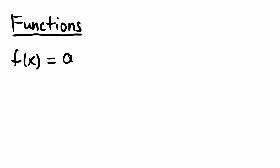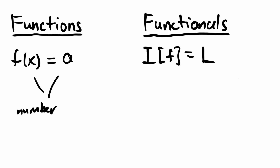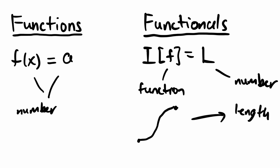Normally, we work with functions that take in a number and spit out another number. However, here, we are working with something called functionals, which take in a function itself — like a path between two points — and spit out a number, like the length of the path. What we want to do is to find the input function that minimizes the value of the functional. To see how we should approach this, let's see if we can draw an analogy with how we optimize regular functions.